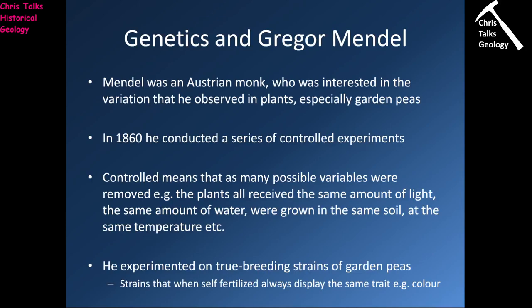Gregor Mendel was an Austrian monk who was interested in the variation he observed in plants, especially garden peas. In 1860 he conducted a series of controlled experiments on pea plants — controlled means you control as many variables as possible: each plant gets the same amount of light, water, soil, and temperature. This means any differences that occur must be due to factors you cannot control. He experimented on true-breeding strains of garden peas — a plant that, if you self-fertilise it, will always display the same trait, such as always producing the same colour.